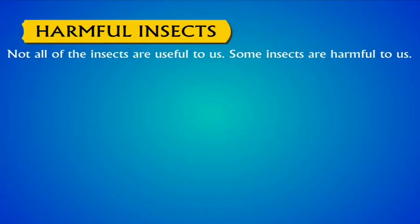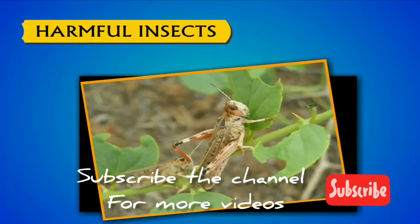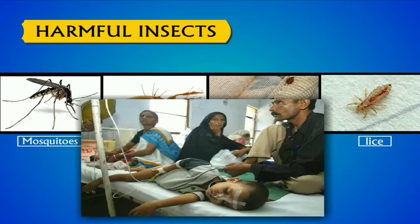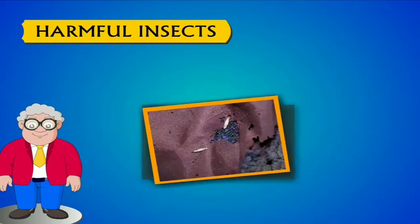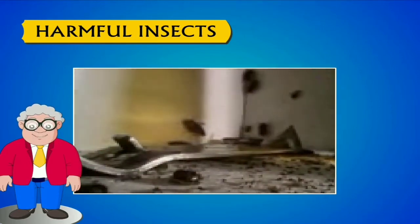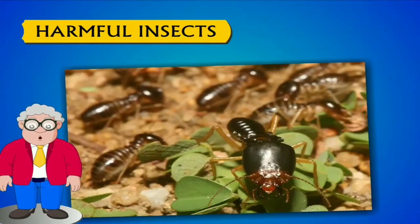Harmful insects: Not all insects are useful to us. Some insects are harmful. Number 1: Locusts destroy our food crops. Number 2: Mosquitoes, mites, bed bugs and lice suck our blood; female Anopheles mosquitoes cause malaria. Cloth moths make holes in our clothes. Cockroaches and house flies carry a lot of germs and dirt on their bodies; they sit on open food items and contaminate them, and when we eat these food items, we fall sick. Number 5: Termites destroy wood.